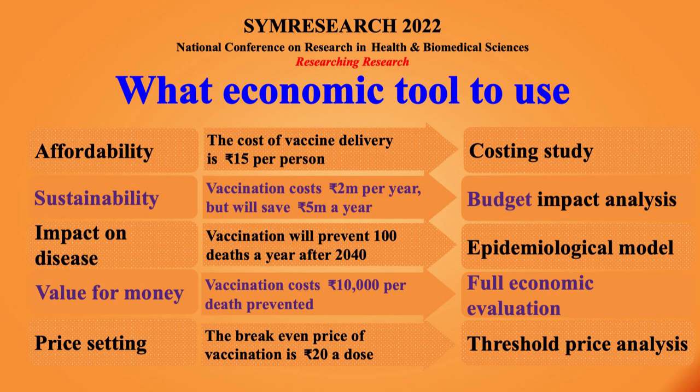Then there is budget impact analysis — sustainability. We see government is not spending so much money on health. Can we increase 50% of the budget to the health sector? The question of sustainability is: what will they do next year? It should spend money every year. Then epidemiological and disease burden, value for money, and price setting — threshold analysis. These different types of analysis answer questions of affordability and sustainability.